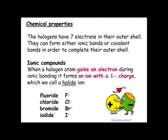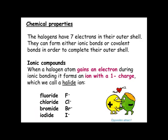Group 7 elements can react in two ways to complete their outer shell and become stable. One is by gaining electrons, forming an ionic bond. In doing so, they have a minus 1 charge, as they've gained an electron — electrons are negative. So the halide ions that are formed are fluoride (F⁻), chloride (Cl⁻), bromide (Br⁻), and iodide (I⁻).